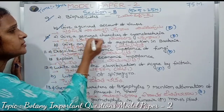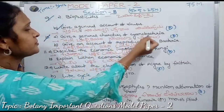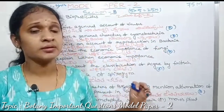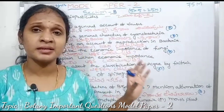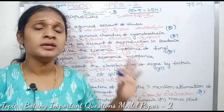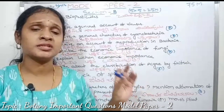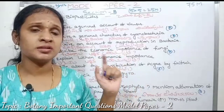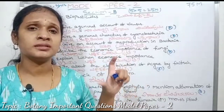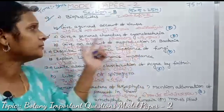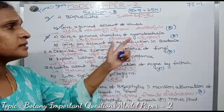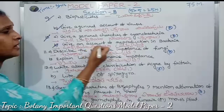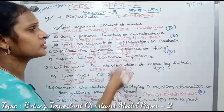Give the general characters of cyanobacteria. Cover general character, cyanobacterial cell structure, classification, nomenclature, and types — the general account of cyanobacteria.